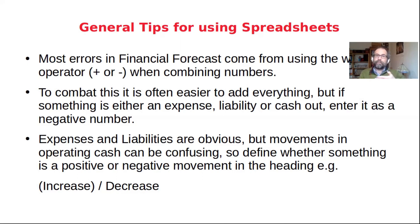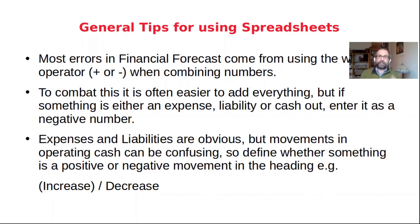This means that when you're entering data, you have to decide whether it is a negative or a positive number. But when you're totalling, subtotalling, or doing any form of combining, you just use the sum function or plus function. The way you decide whether something should be entered as a negative number is: if it's an expense, a liability, or cash leaving the organisation, you enter it as a negative number. Some of these are obvious — expenses like cost of sales, overheads, and share interest out are really straightforward. Liabilities are equally obvious: if it's a loan or money owed to trade creditors, it's a liability and you make it a negative number.